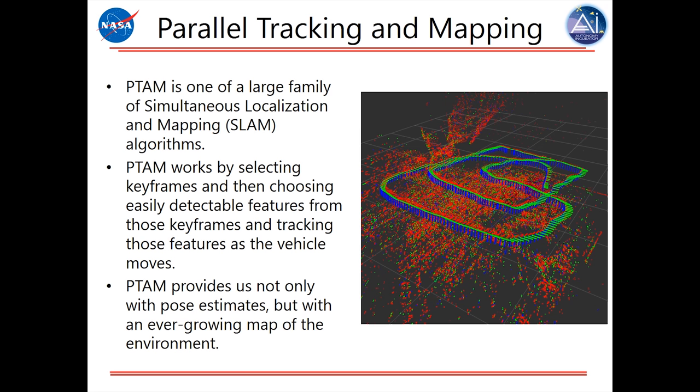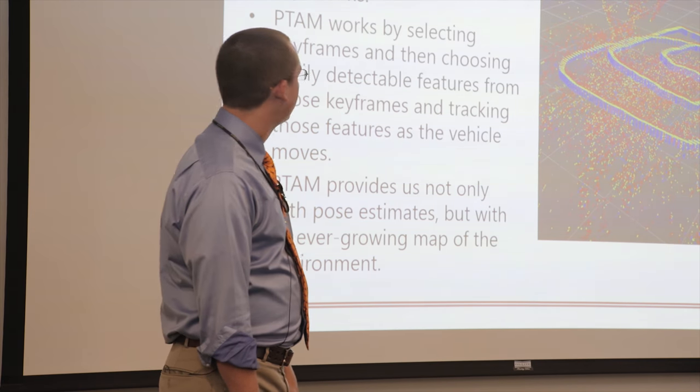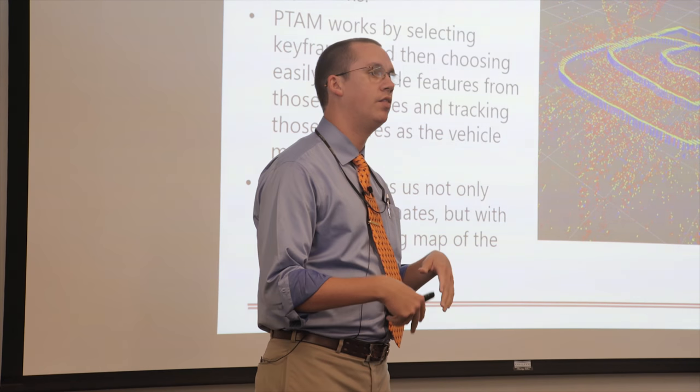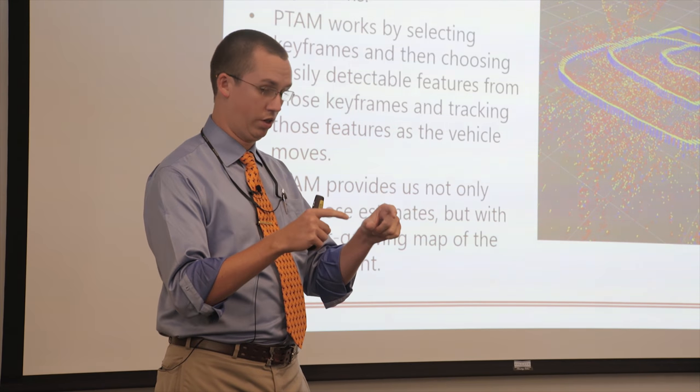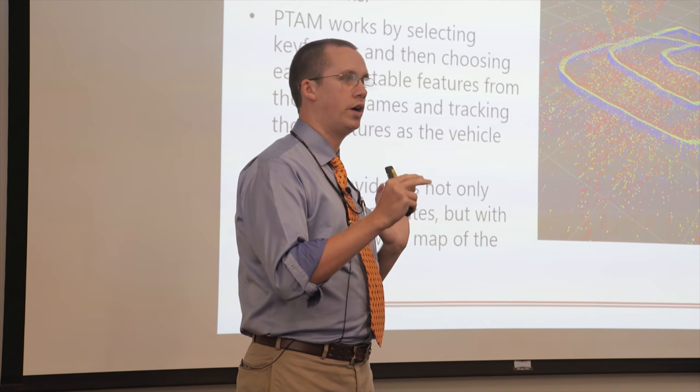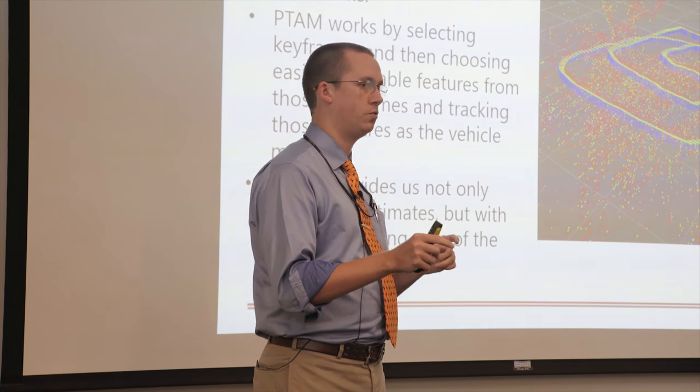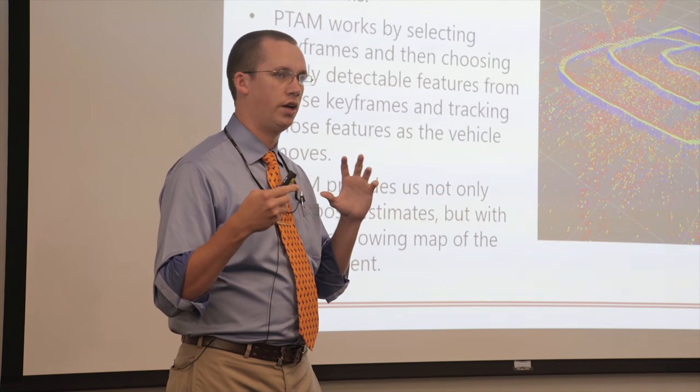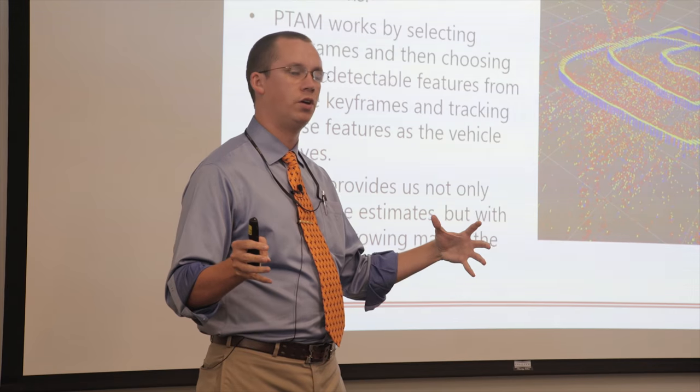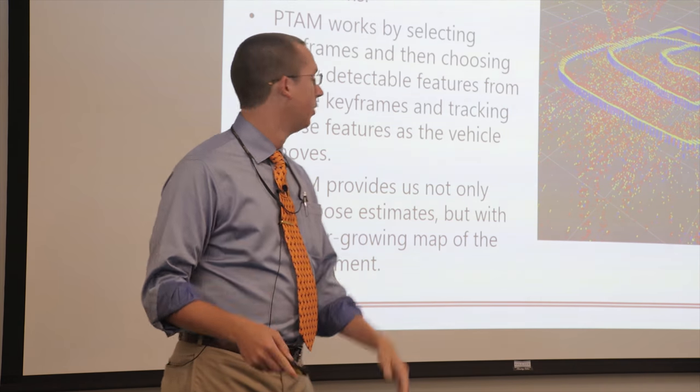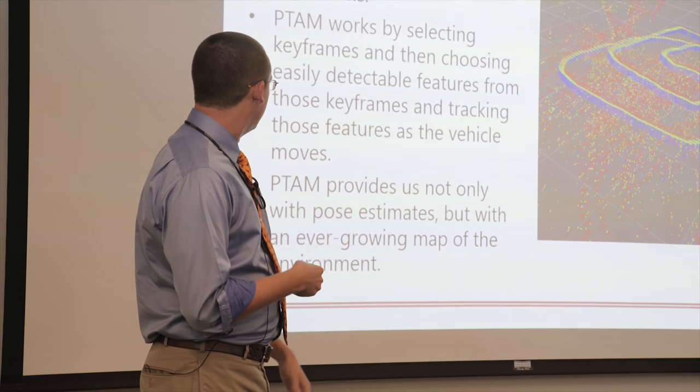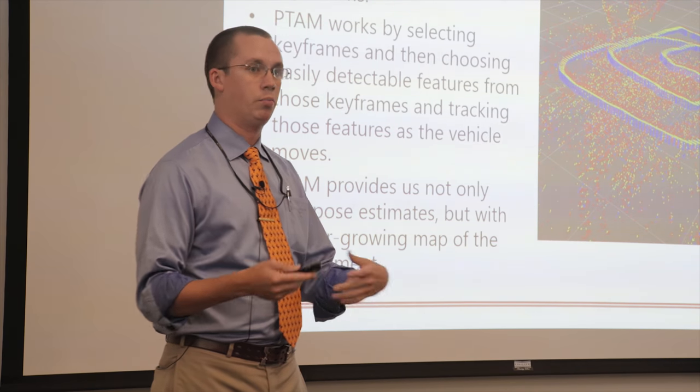Parallel Tracking and Mapping is one of the more popular SLAM algorithms. PTAM works by selecting keyframes from a video feed and then searching for very easily identifiable features within each of those keyframes. Between keyframes, it tries to track the motion of those features. In so doing, it produces an ever-growing map of the environment that the vehicle is in and also gives us an estimate of the ego motion of the camera. PTAM provides us with pose estimates as we are flying along and building up this map.